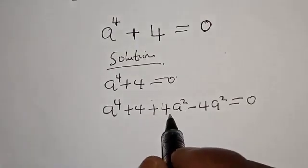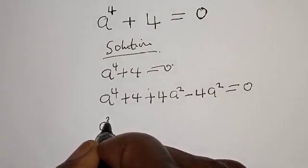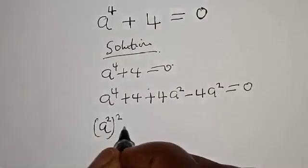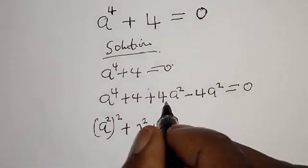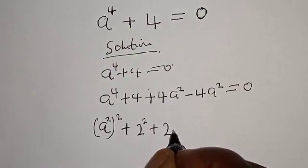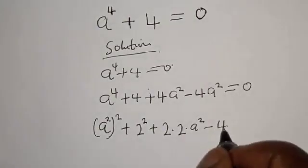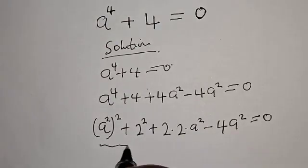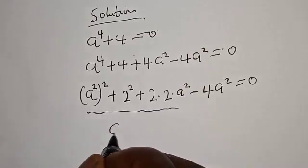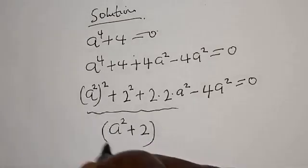This does not formally change the equation because minus 4a squared plus 4a squared cancel out, and it still gives you a raised to the power of 4 plus 4. Then we have a squared, a squared plus 4 — which is 2 squared — plus 4a squared, expressed as 2 multiplied by 2 multiplied by a squared.